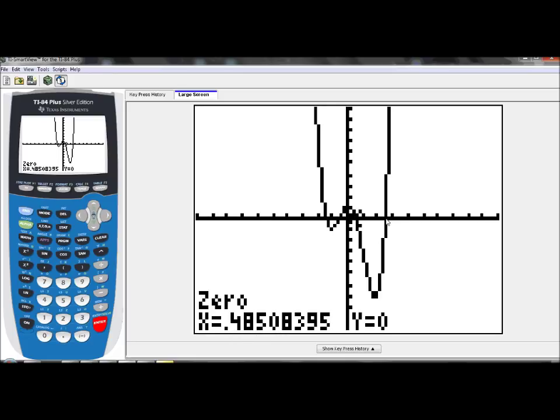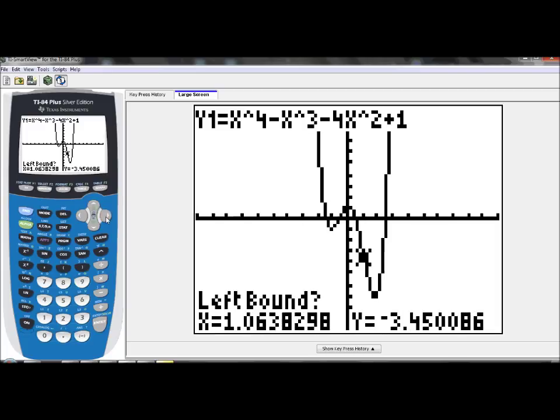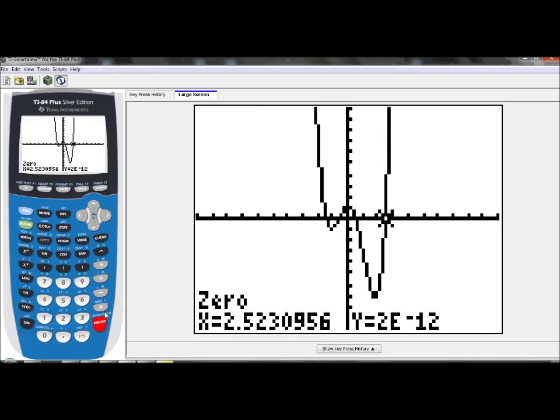And there's still one more left. So second, calc, zero. Left bound, I'm to the left of the zero here, so I'm going to hit enter. And then right bound, I'm to the right of the zero there, so I'm going to hit enter. And guess, enter again. And there's your fourth zero, 2.52. So those are all of the zeros that we have. So that's how you do the zero. We learned that before when dealing with quadratics, so this is just a refresher.